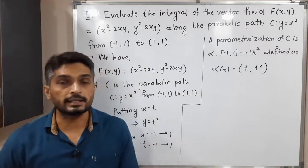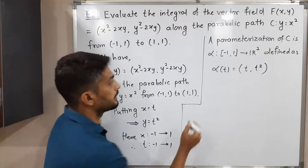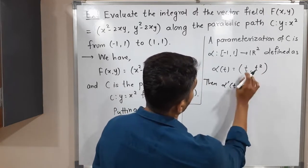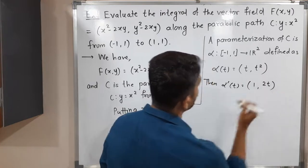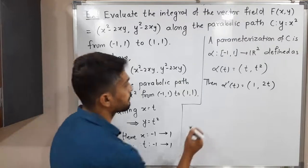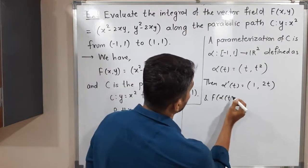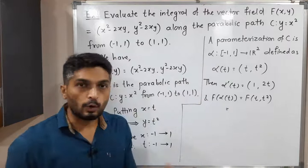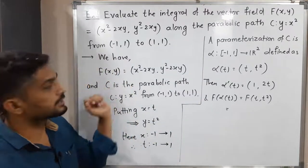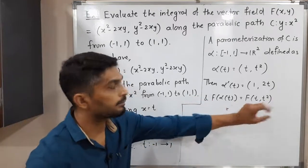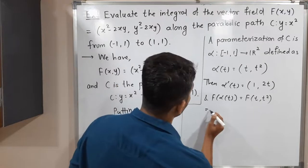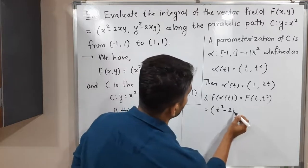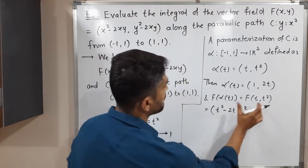After that, we will find α'(t) and f(α(t)). α'(t) can be found by taking the derivative of each component: derivative of t is 1, derivative of t² is 2t. So α'(t) = (1, 2t). Now f(α(t)) = f(t, t²). Following the definition of f, at the place of x we put t and at the place of y we put t². The first component gives x² - 2xy = t² - 2t·t² = t² - 2t³.